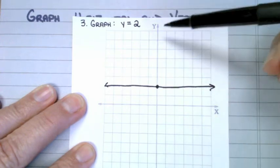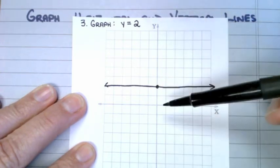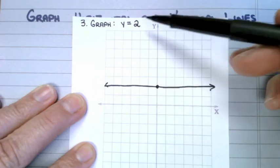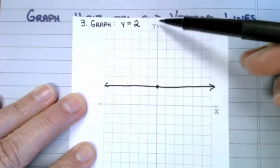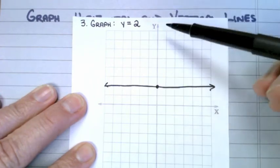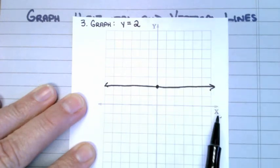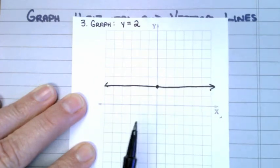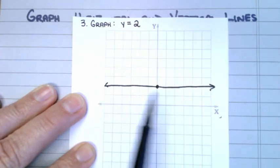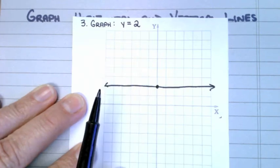A lot of times students want to draw a line going up and down — they put a point on 2 on the y-axis and go up and down. No — that line going up and down runs into the x-axis. You do not want this line to run into the x-axis, because there's no x in this equation.